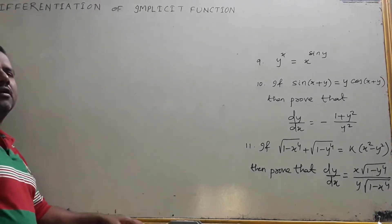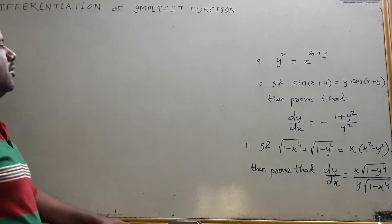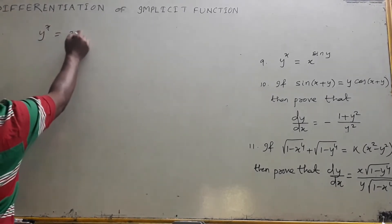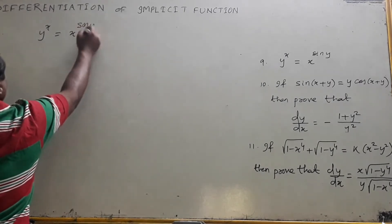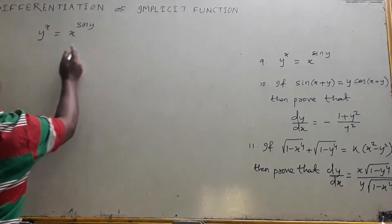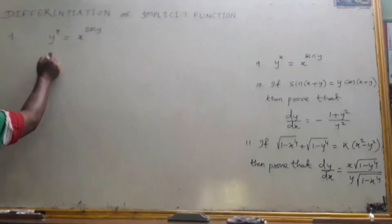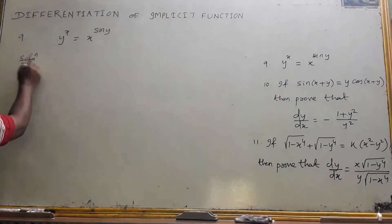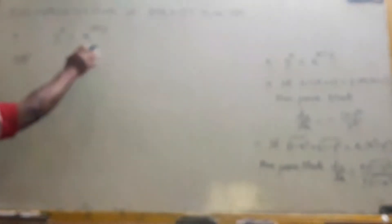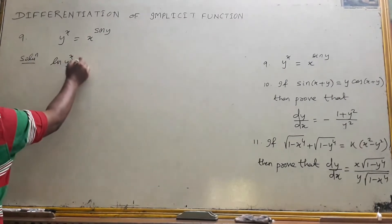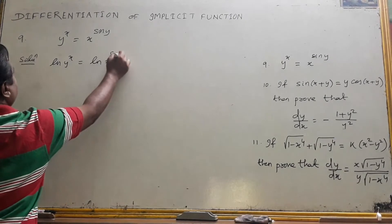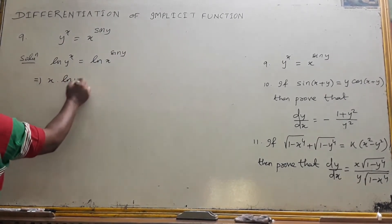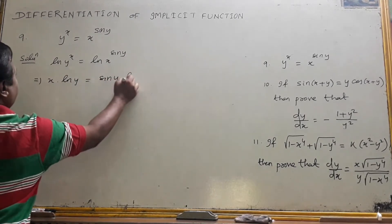Now I am solving y^x = x^(sin y). This is variable to the power variable on both sides. So we have to take logarithm of both sides. Taking ln of both sides: x·ln y = sin y · ln x.